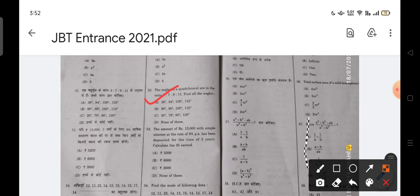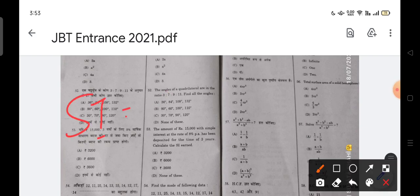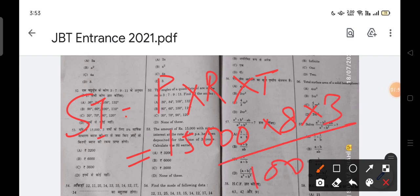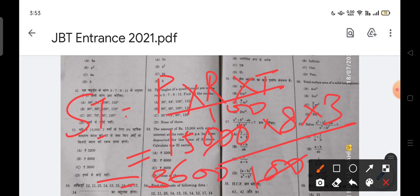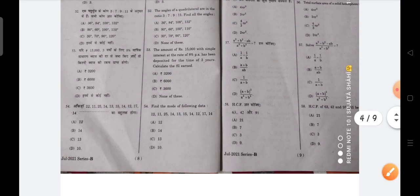Next is find the amount of rupees 15,000 with simple interest at the rate of 8% per annum deposited for 3 years. Calculate the SI. Simple interest formula is P into R into T upon 100. So you calculate it, 15,000 into 8 into 3 upon 100. Cancel and solve, the answer is 3,600. C is the correct answer.